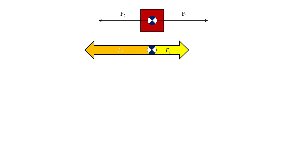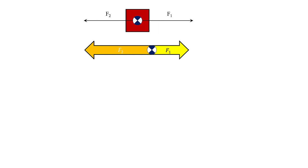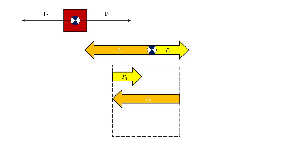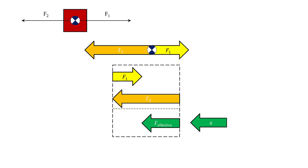Finally, if F2 was larger than F1, we would see that the box would accelerate to the left. Again, if we looked at our two force vectors and put the tip of one next to the tail of the other, and then drew a vector from the tail of the first to the tip of the second, that would be our effective force vector. In this case, that effective force vector is going from right to left, so we have an acceleration that also goes from right to left.